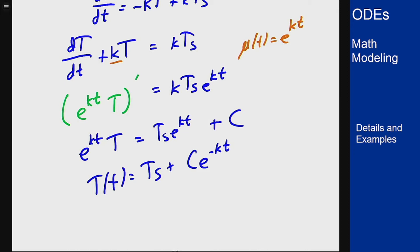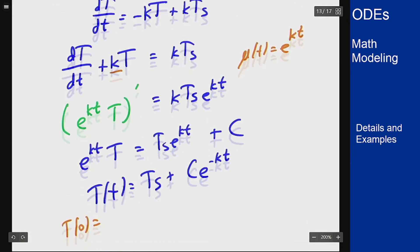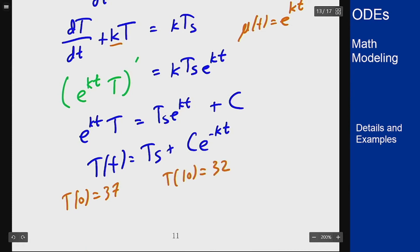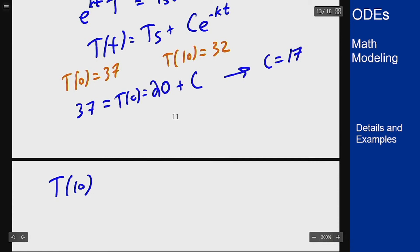Now I have two points of data and two unknown constants. Plugging in t=0, T=37, I get 37 = 20 + c, so c = 17. Now I can use my second value to determine k. After 10 minutes, 32 = 20 + 17e^(-10k). So 12 = 17e^(-10k), which gives 12/17 = e^(-10k).